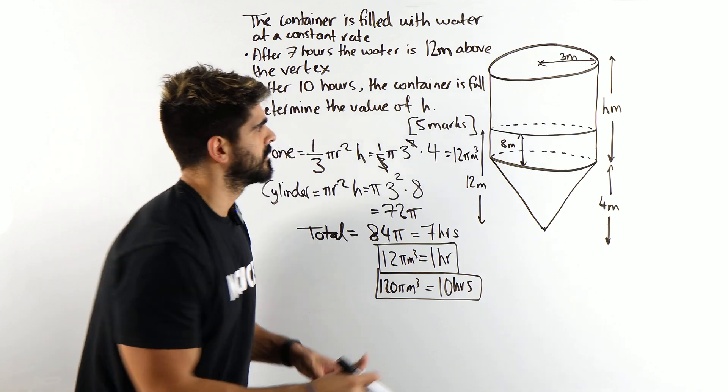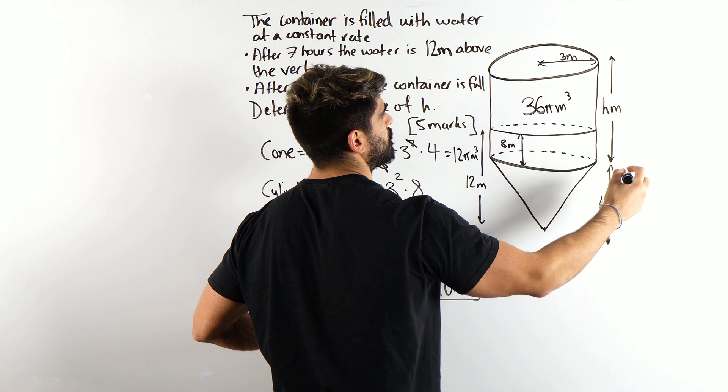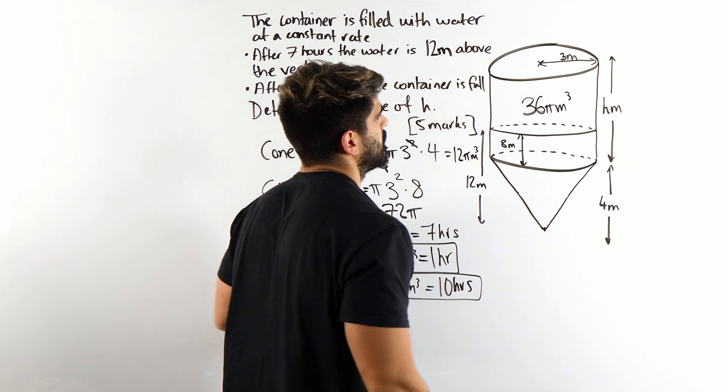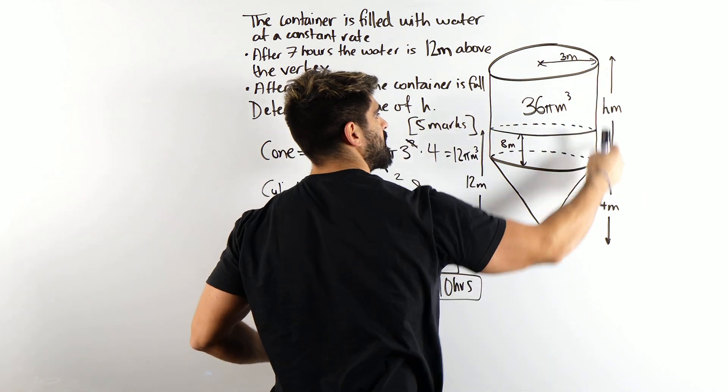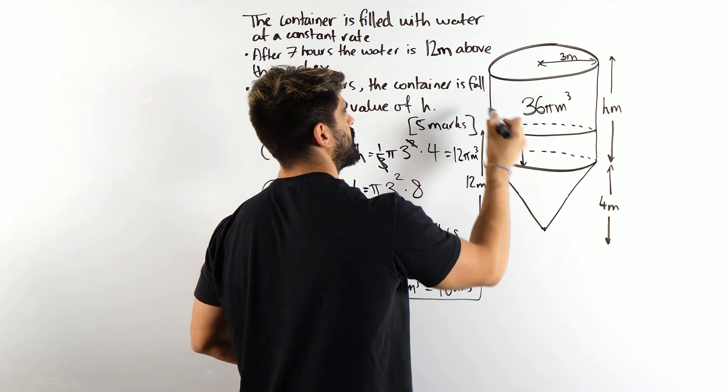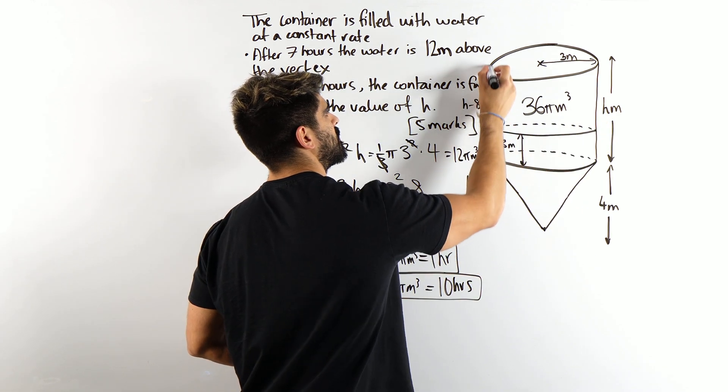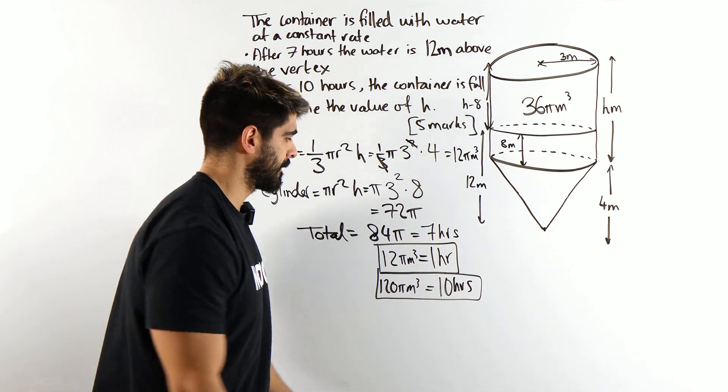So 36 pi meters cubed is this whole volume. But that's this bit. If this is 8 and the whole thing is h, the height of this is actually h take away 8. So h take away 8 is this. And now we can rewrite its volume.